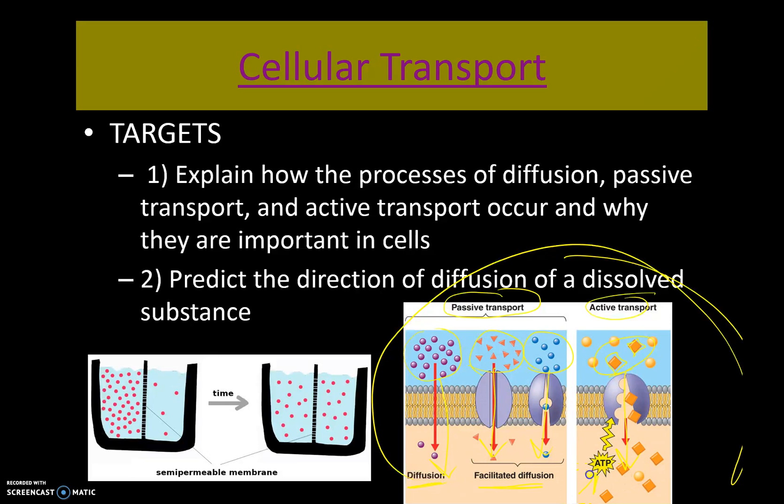Diffusion occurs when the random movement — still random because of Brownian motion — of molecules evens out the distribution of that solution. Overall, the movement of molecules is from an area of high concentration to an area of low concentration. That is called going with the concentration gradient, going from high to low.